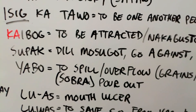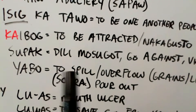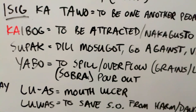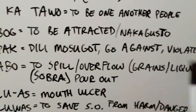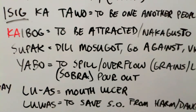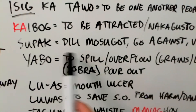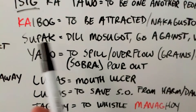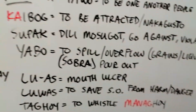We're almost done, folks. The next word we have is supak. Supak is dilit mo sugot — they're not going to agree with you; they're going to go against you and they're going to violate. We talked about what sugot is — you should know what that is. Supak. Kanin ng supak, dilit mo sugot. So it's just the opposite. Dilit mo sugot is the same as supak.